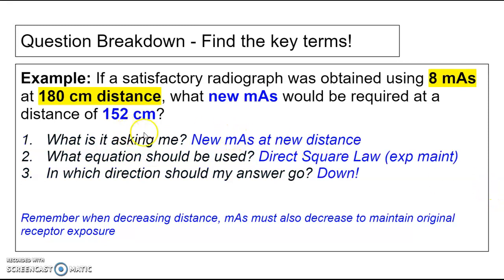So we're going to find the key words. Original mAs, original distance is asking me for a new mAs at a new distance. So what is it asking me? New mAs and a new distance. Which equation? The direct square law. Which direction should my answer go? If I use 8 mAs at this distance, will I use a higher mAs or a lower mAs if I decrease my distance? And I'm hoping you said decrease your mAs because the distance decreased.